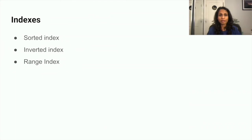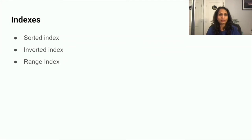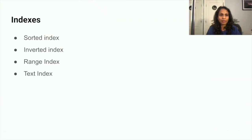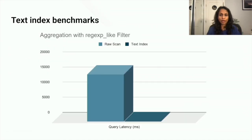Range indexes help with range filter predicates such as queries where timestamp is greater than X or cost is less than or equal to Y. This is especially useful for anomaly detection use cases, which typically have time-series data requiring many range queries. A benchmark shows the speed-up achievable by using a range index for queries with range filter predicates. Text index enables complex use cases like free-text search and log analytics — configuring a text index for regex or text match queries is significantly faster than doing a raw scan.